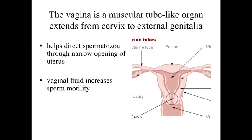Similar to the uterus, we're going to have a muscular tube-like organ, but with the vagina, it's essentially going to extend from the cervix to the external genitalia. The function of the vagina is to help direct the spermatozoa through the narrow opening of the cervix into the uterus. The vaginal fluid is going to be involved with increasing sperm motility, such as priming the sperm as well as delivering it into the uterus. From there, it's going to pass from the uterus into the uterine tube, where fertilization may be occurring.